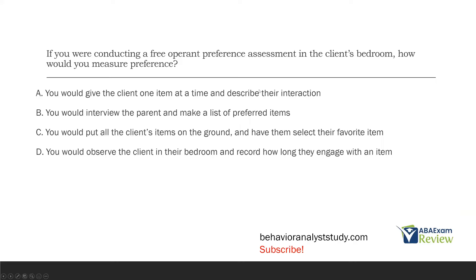Question seven: if you were conducting a free operant preference assessment in the client's bedroom, how would you measure preference? We're talking about a free operant preference assessment. In a free operant or naturalistic assessment, we're not really controlling or driving anything. A: you would give the client one item at a time and describe their interaction. That's not very free — it's very contrived. That's a single stimulus preference assessment, one of the most contrived. B: you would interview the parent and make a list of preferred items. That's an indirect preference assessment.